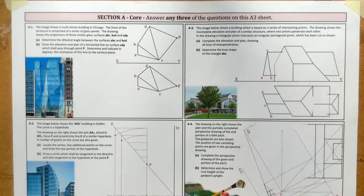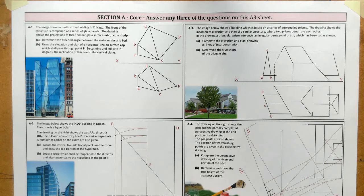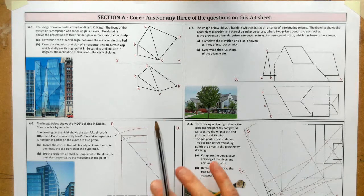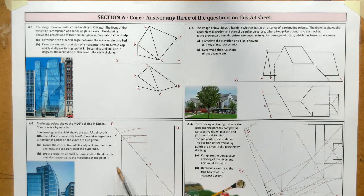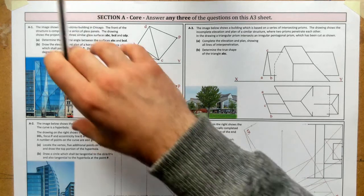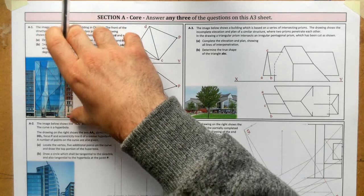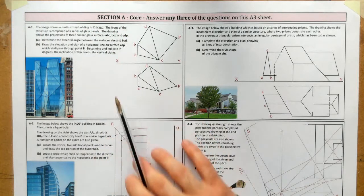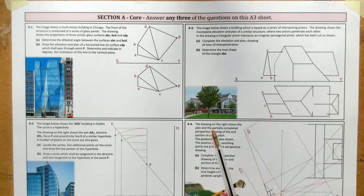Hi folks, the questions we have in front of us today are the 2019 Section A Higher Level core questions from the Section A paper — 4 questions. You have to do 3, but for the purpose of this video we're going to go through each one individually. So starting off, we're going to start with Question A1, then move on to A2, A3, and A4 to finish it out.